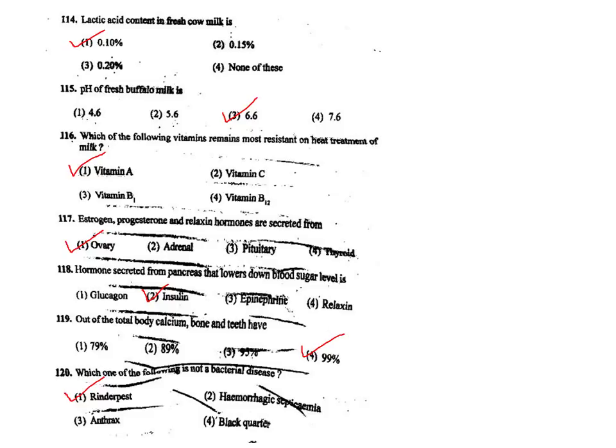Q119. Out of total body calcium, bone and teeth contain 99% of the calcium. The correct answer is option 4.